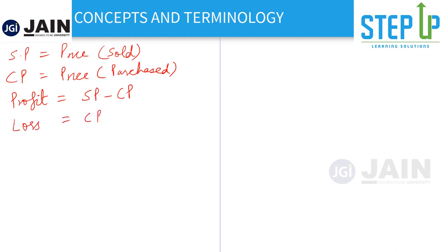Similarly, loss is CP minus SP. For example, if I bought something for 100 rupees and sold it at 120 rupees, 120 is my SP and I got a profit of 20 rupees. If I bought something at 100 rupees and sold it at 80 rupees, I incur a loss of 20 rupees.